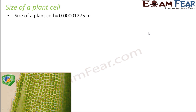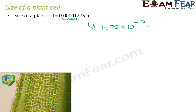Let's take another example involving something very small — the size of a plant cell. All living organisms are made up of cells, which are the building blocks of life. A plant cell is extremely microscopic; its size is around 0.00001275 meters. We move the decimal point to the right until we get a number between 1 and 10, giving 1.275. Counting jumps: 1, 2, 3, 4, 5 — so this is 1.275 × 10⁻⁵ meters.